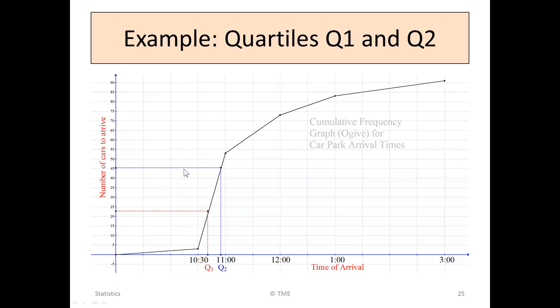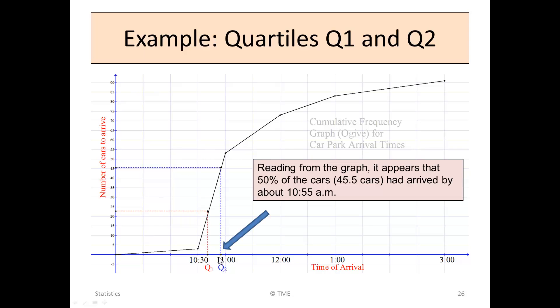We now move to the second quarter, or the halfway point, Q2, and we draw our horizontal and our vertical line down. Again, if we read from the graph, it appears that 50% of the cars had come in just before our 11 o'clock there, maybe around 10:55 is when we hit that point.